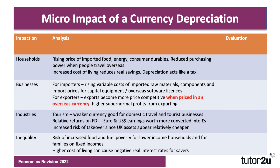For exporters, however, a fall in the nation's currency — including the pound — in theory makes exporters more price competitive. The key point, which people often miss in the exam, is that exports become more price competitive when priced in an overseas currency. So when a UK exporter is selling study guides to the United States, the UK price stays the same but the dollar price goes down. In theory, that should increase the returns and profits from exporting.